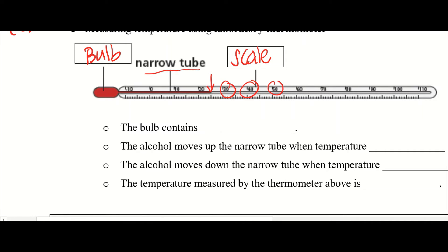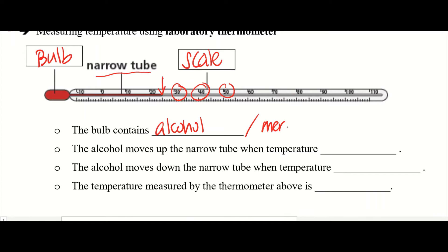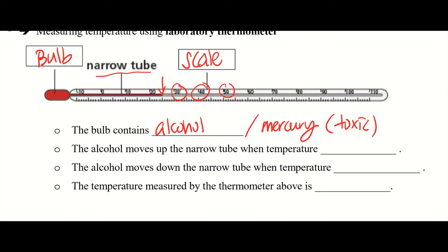In the bulb, it typically contains alcohol. You may read from somewhere — especially old websites or old textbooks — that in the thermometer it sometimes contains mercury. Mercury is a metal that is liquid and it's silver in color. In the past they used mercury as the liquid inside the thermometer, but slowly it got phased out — people stopped using it — because mercury is very toxic. If your finger or any part of your skin comes into contact with mercury, it's highly absorbable into your bloodstream and it's toxic to the human body — you can get poisoned from mercury. So nowadays we don't really use this anymore; mostly it's just alcohol.